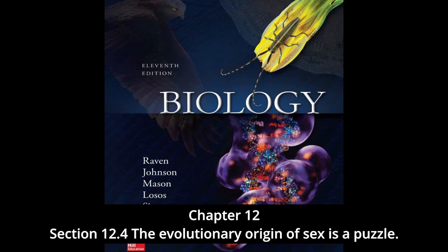Section 12.4 — The evolutionary origin of sex is a puzzle. Not all reproduction is sexual. In asexual reproduction, an individual inherits all of its chromosomes from a single parent and is therefore genetically identical to its parent. Bacterial cells reproduce asexually by undergoing binary fission to produce two daughter cells containing the same genetic information. Most protists reproduce asexually, except under conditions of stress when they switch to sexual reproduction. Among plants, asexual reproduction is also common.